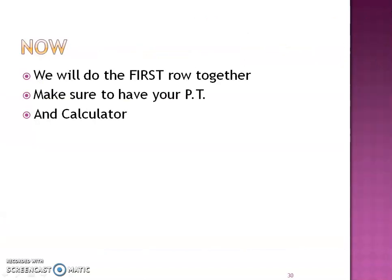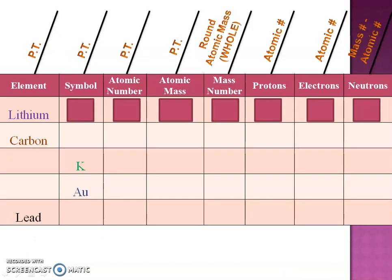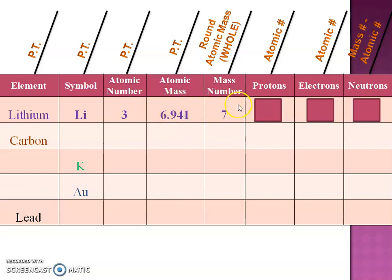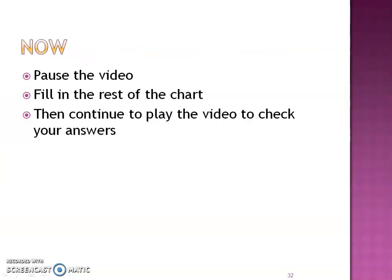Let's do the first row together — make sure to have your periodic table and a calculator. Locate lithium; the symbol is Li. Find its atomic number, then its atomic mass and mass number — the atomic mass is all the numbers on the periodic table, but the mass number is rounding that to a whole number. Protons and electrons equal the atomic number, so those columns should have the same numbers. Calculate the neutrons by subtraction. Pause the video, fill in the rest of the chart, then play the video to check your answers.